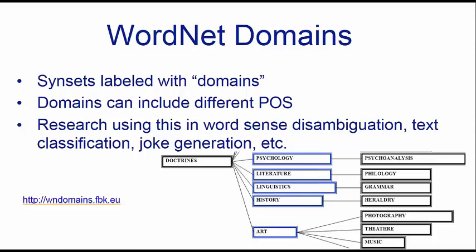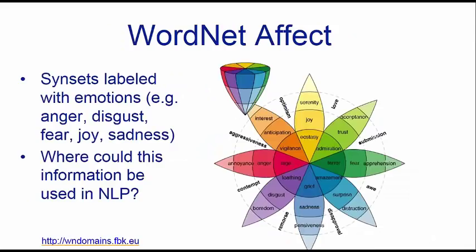Another useful layer is WordNet Affect — emotion annotations on top of WordNet. Words are annotated with their emotional valence: emotions such as anger, disgust, fear, joy, and sadness. A word such as 'happy' is labeled with joy, while a word such as 'cry' would be labeled with sadness.